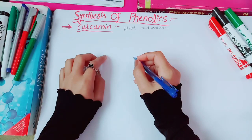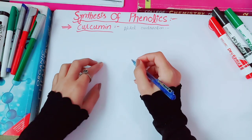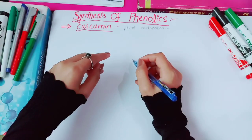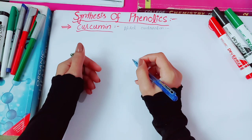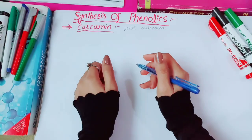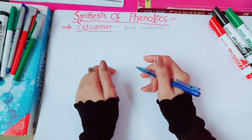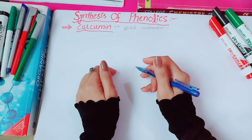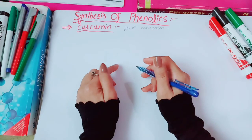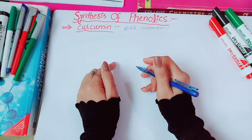As phenolics are present in food consumed in human diets and in plants used in traditional medicine of several cultures, their role in human health and disease is a subject of research. Some phenolics are germicidal and are used in formulating disinfectants. Now let's get started with the first derivative of the phenolics, which is curcumin.